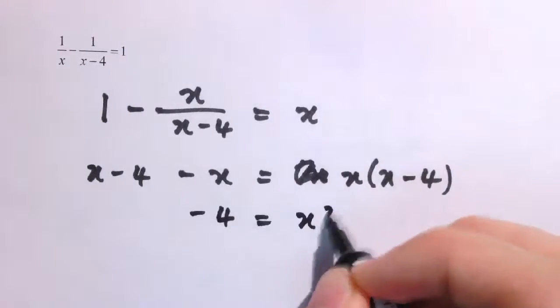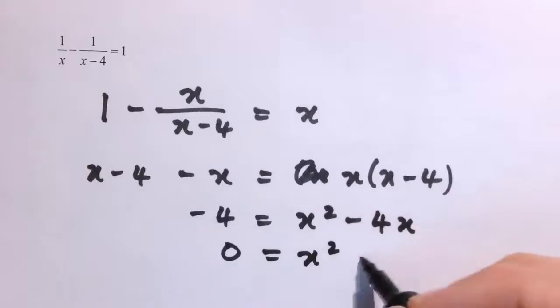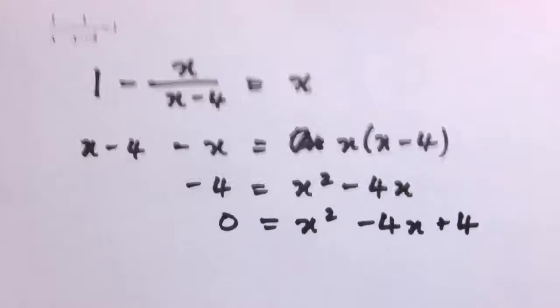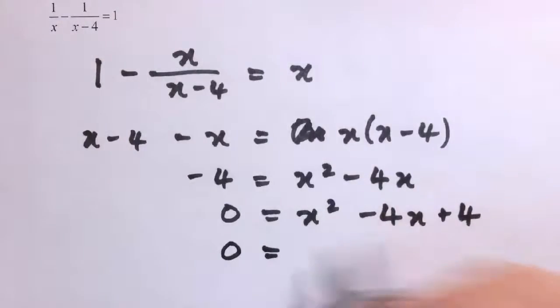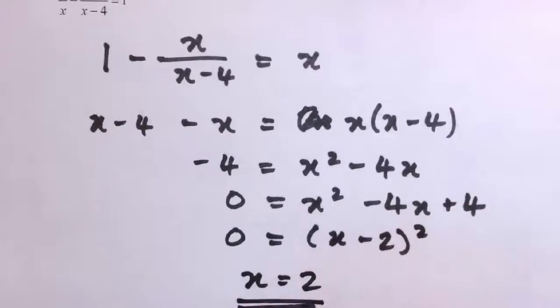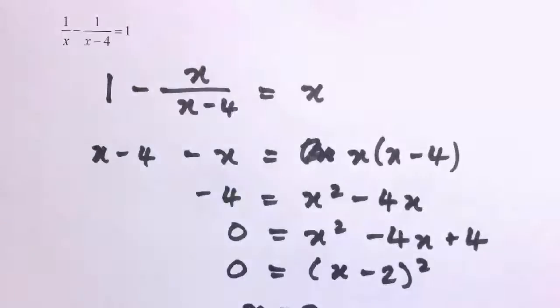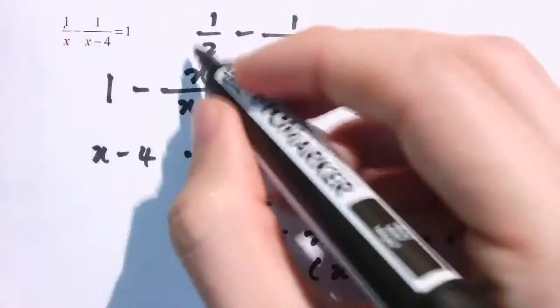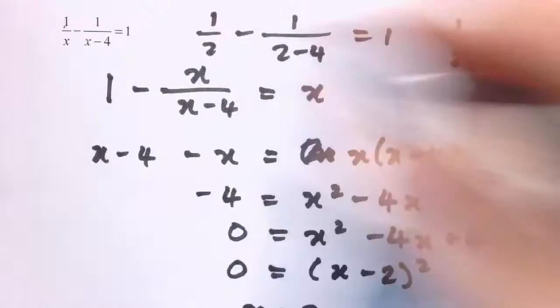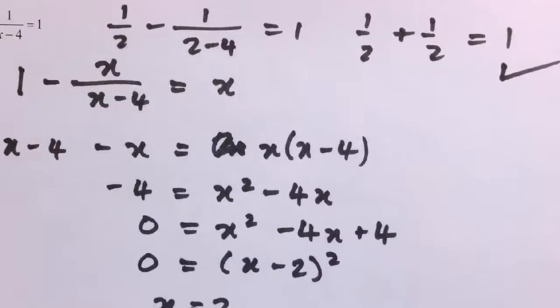So we're left with minus 4 equals x squared minus 4x, which gives the quadratic 0 equals x squared minus 4x plus 4. This factorises as (x minus 2) squared, so the only solution is x equals 2. We can verify: substituting back gives 1 over 2 minus 1 over (2 minus 4), which is a half minus (minus a half), which equals a half plus a half equals 1. Correct.